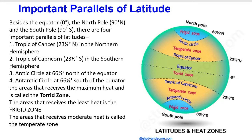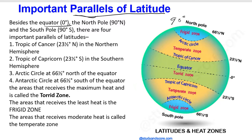Before you understand these factors, you need to understand the lines of latitude. The parallel lines of latitude are important to know in order to understand the factors affecting climate. Beside the equator, which is zero degrees, the North Pole is 90 degrees North and the South Pole is 90 degrees South.